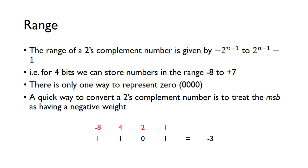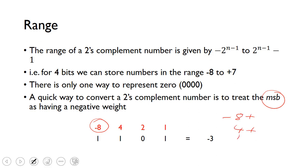There's a very nice shortcut to convert a two's complement number to decimal: we just treat the most significant bit as having a negative weight. Normally the leftmost column would be worth positive 8, but for a two's complement number, it's worth minus 8. For example, minus 8 plus 4 plus 1 gives us minus 3. That's a quick and easy way of converting a two's complement number to decimal.